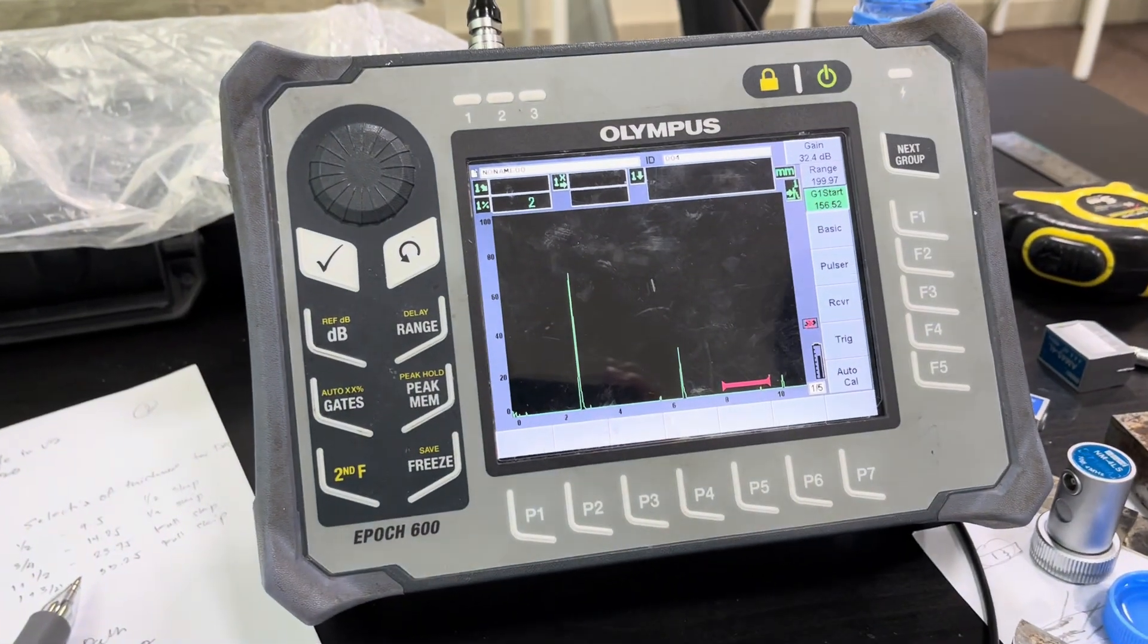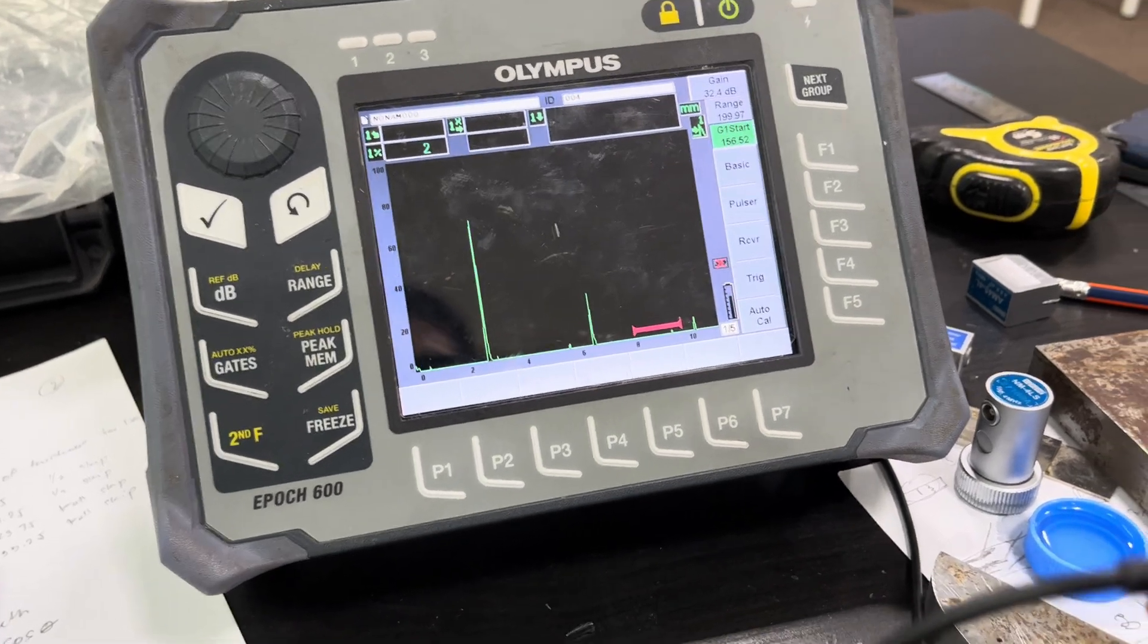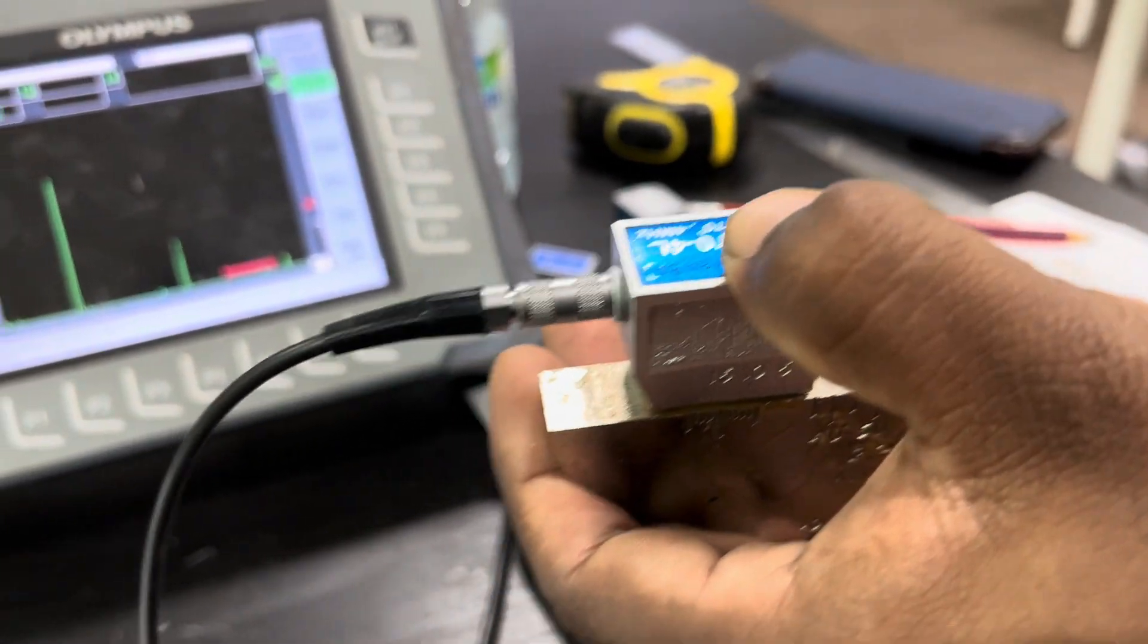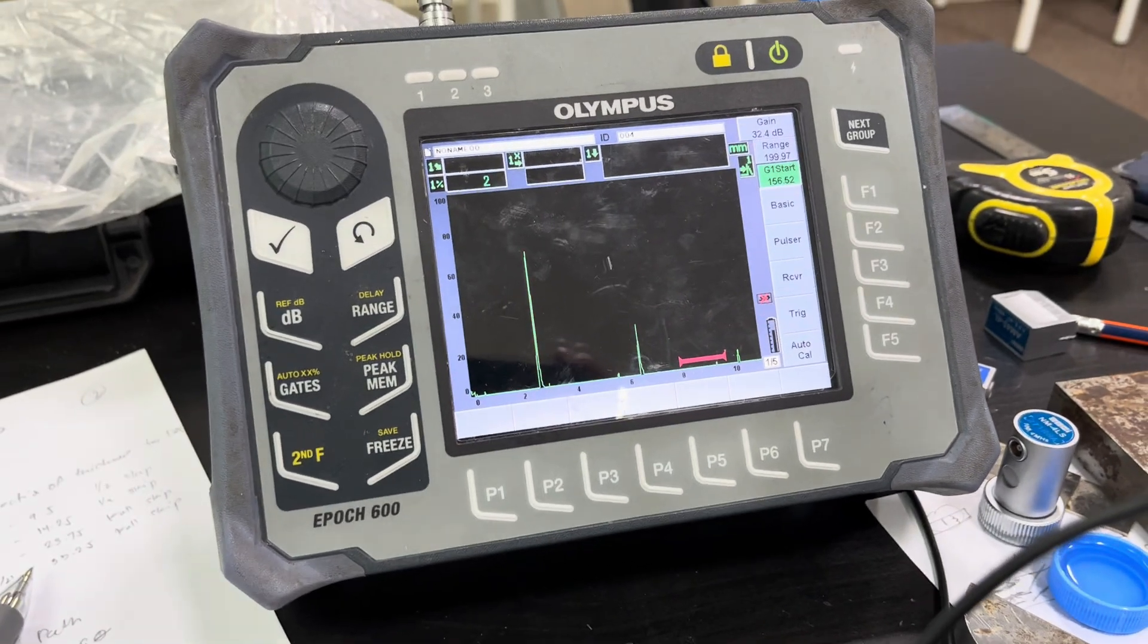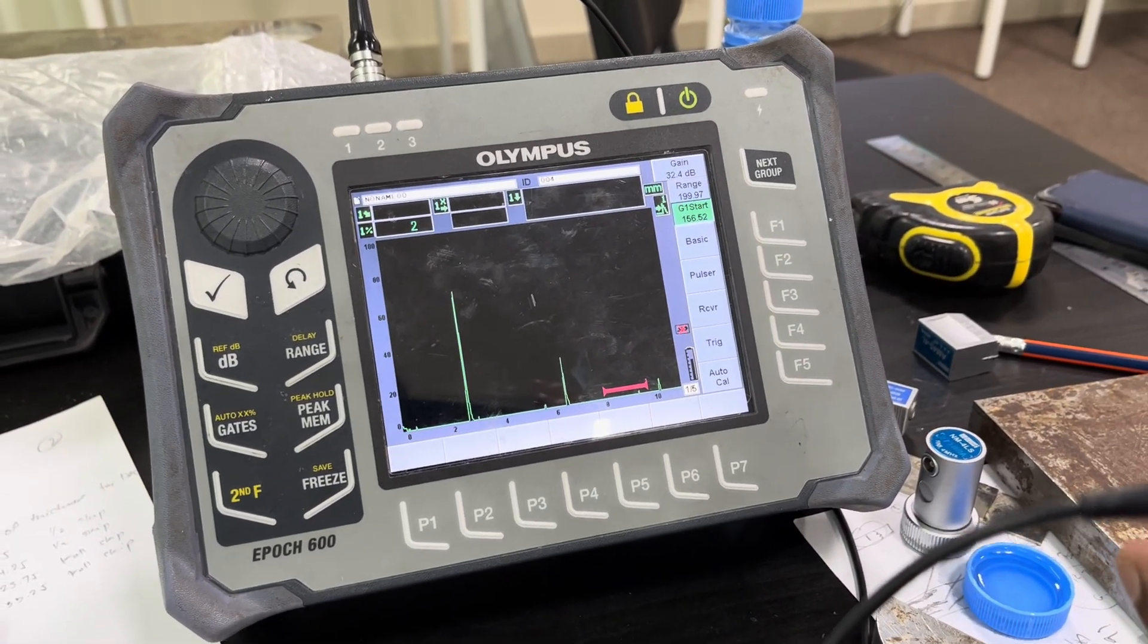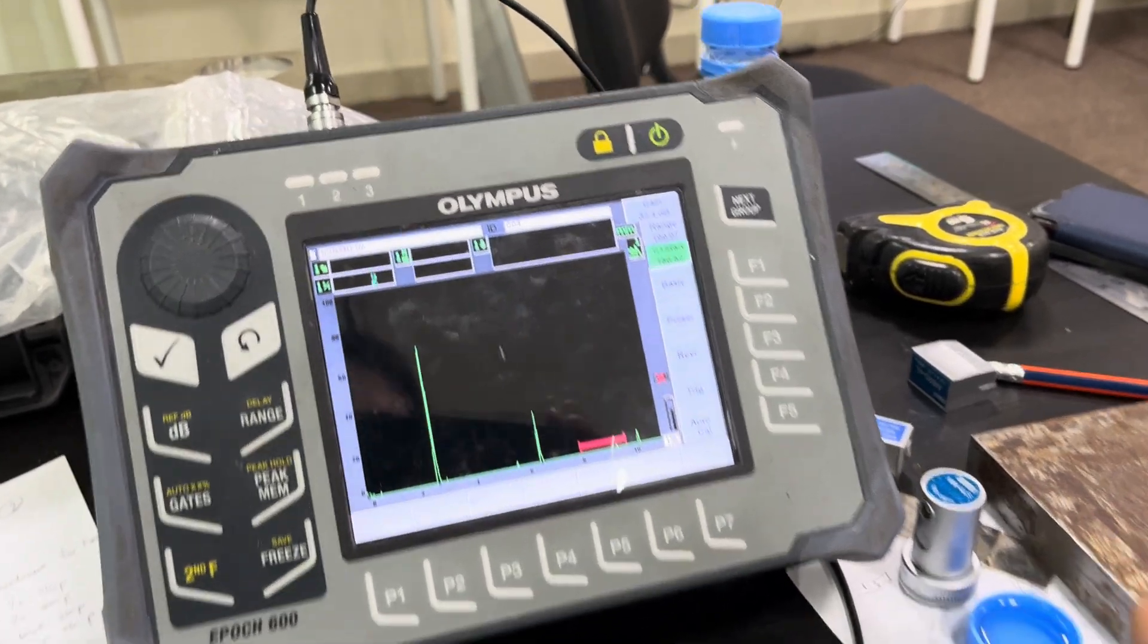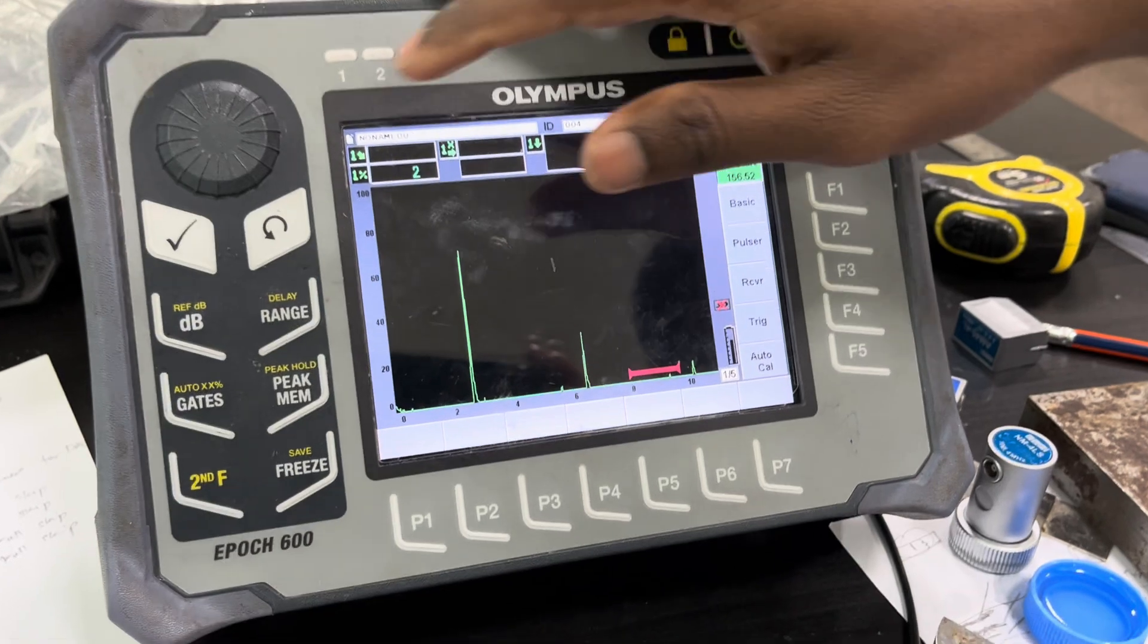Now I am going to adjust the gate. In this situation, when the probe is placed towards the 50R, the first back wall echo should be at 50, the second back wall echo should be at 50 plus 75—that's 125—and the third should come at 200. Let's check.